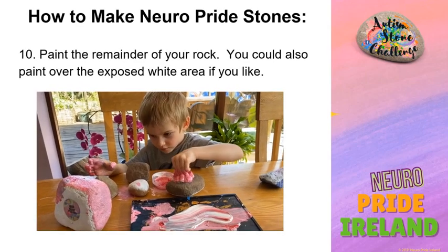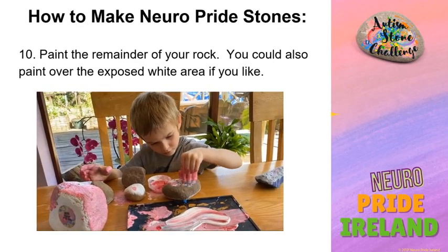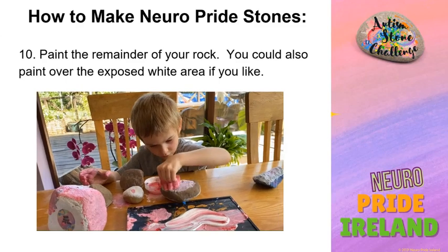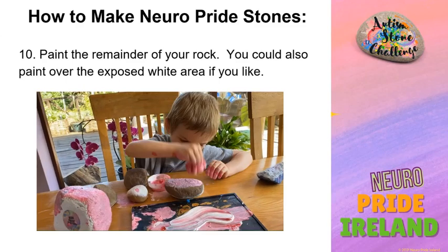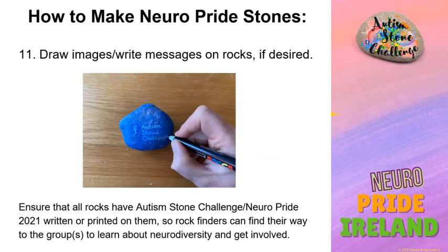Paint the remainder of your rock. You can also paint over the exposed white area if you like. You can also draw images or write messages on the rocks. Acrylic pens are much easier to work with if writing or drawing fine details compared with a brush. Ensure that all rocks have 'Autism Stone Challenge' and/or 'NeuroPride 2021' written or printed on them, so rock finders can find their way to the groups to learn about neurodiversity and to get involved.